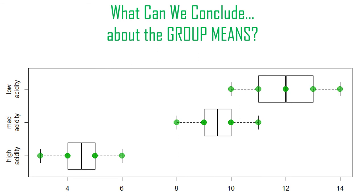That's how ANOVA works: you compare the means to each other using the variance between the group means, then check yourself with a reality check of the variability within the groups.